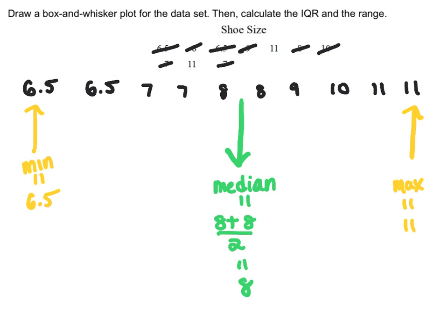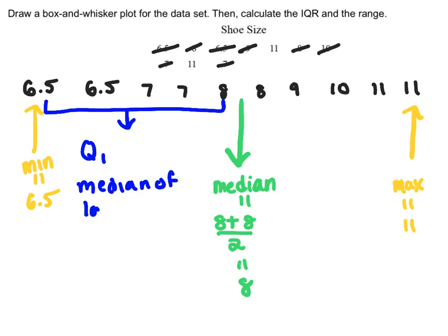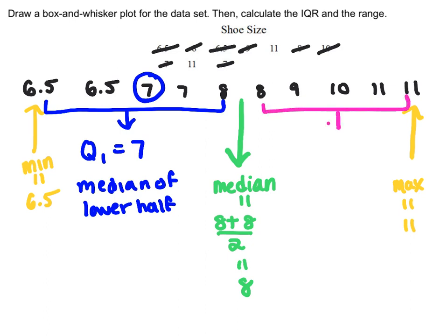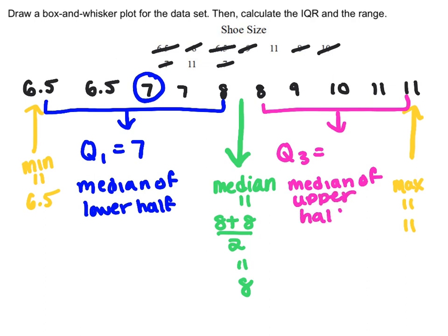Now I need to find Q1 and Q3. Since the median is not an actual data point, I'll include it in the Q1 and Q3 calculations. Q1 is the median of the lower half — the median of those five numbers is 7, so Q1 equals 7. For Q3, the median of the upper half including the 8 gives values 8, 9, 10, 11, 11, so the median is 10. Q3 equals 10.